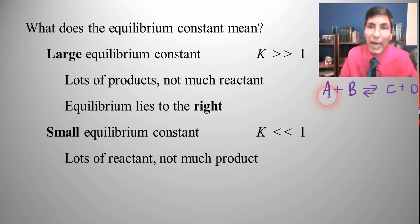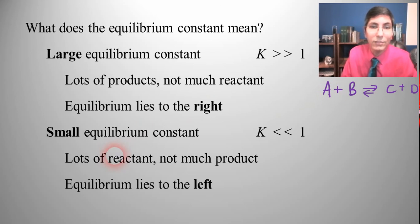And since A and B, the reactants are written on the left side of the arrow, we're going to say that equilibrium lies to the left. So that's what that means if you hear someone say equilibrium lies to the left, it means we have a lot of reactants because we generally write reactants on the left side of the arrow.